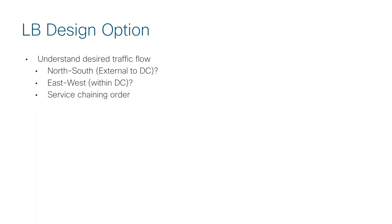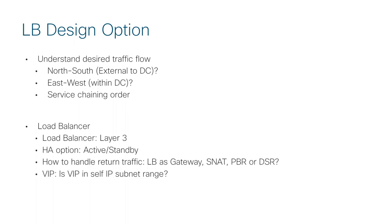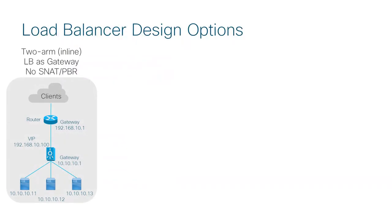Do you need other service devices such as a firewall in front of the load balancer? These are typical items to identify the design requirements. In case of load balancer, it's most likely layer 3 routed mode and active-standby HA. The important points to check are how to handle return traffic and VIP addressing. We are going to talk about 4 typical load balancer design options in traditional design and then explain how to translate these designs to ACI constructs.